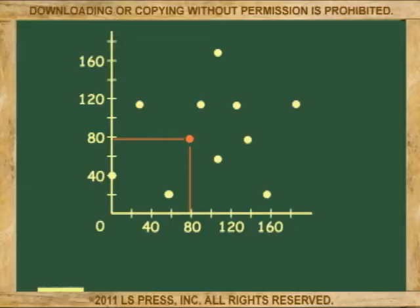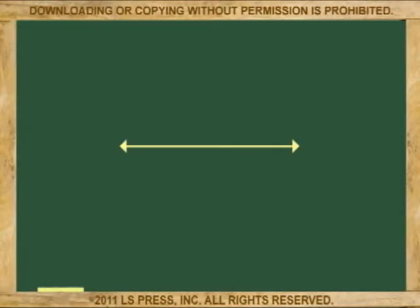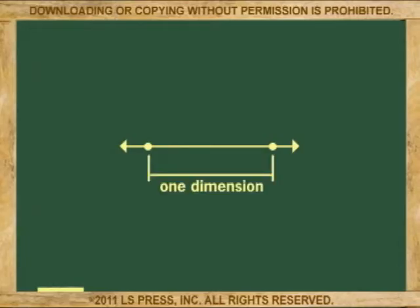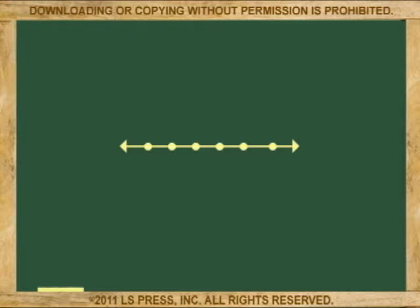The next definition we'll cover is the line. If the point has no dimension, then how many dimensions does a line have? Because the simplest line is made from two points, then a line has one dimension only. A line, of course, could have more than two points. Points that make up a straight line are said to be collinear, which means that they are part of the same line.